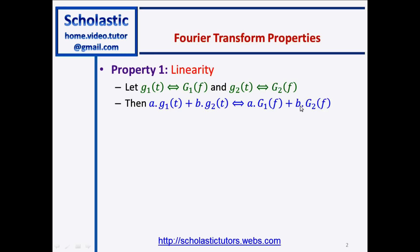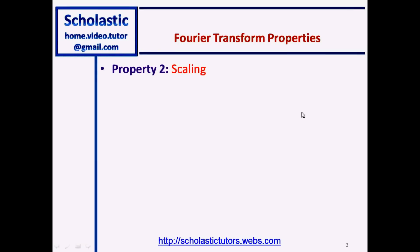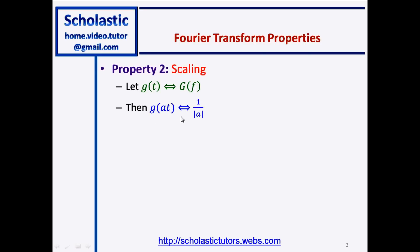The next property is called the scaling property. You are given a function g(t) in the time domain and G(f) in the frequency domain. We can write g(at) in the frequency domain equal to 1 over |a| times G(f/a). Basically, the multiplication in the time domain will become a division for the amplitude as well as for the frequency, giving f/a.